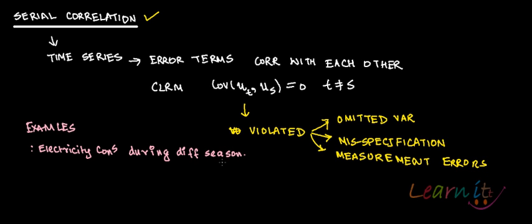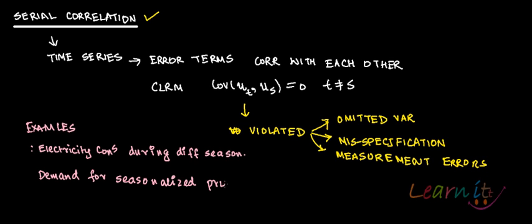In data where you see seasonality occurring quite rapidly, there could be the problem of serial correlation. Similarly, it could be a demand for a highly seasonalized product. In these cases, the problem of serial correlation might occur.